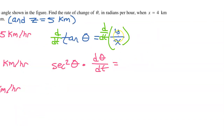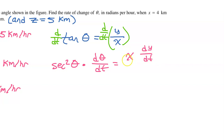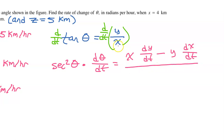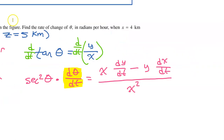On the right-hand side, we use the quotient rule. Low D high minus high D low, draw the line and down below the bottom squared will go. So: low D high is X times dY/dt; minus high D low is Y times dX/dt; all over X squared. Don't forget that we are looking for dθ/dt, which means we need values for all other variables in this expression.